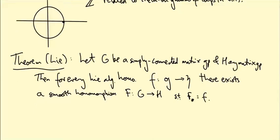Capital F from big G to big H such that F star equals little f. And the key assumption here, which fails for the group U(1), is that G is simply connected, which I haven't described yet.